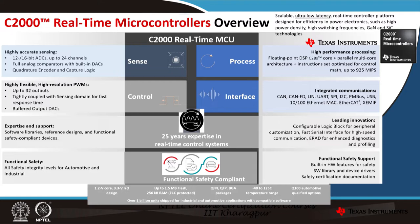C2000 has 25 years of experience in real-time control systems and supports substantial software to help kickstart development, including software libraries, reference designs, and functionally safety-compliant devices for automotive and industrial safety requirements. Additionally, the configurable logic block (CLB) for peripheral customization can replace many FPGA needs. We also have a fast serial interface — a Texas Instruments proprietary solution — for high-speed communication, and ERAD for enhanced diagnostics and profiling capability.